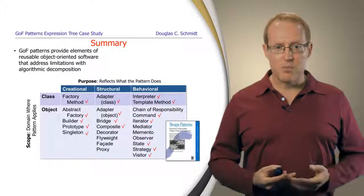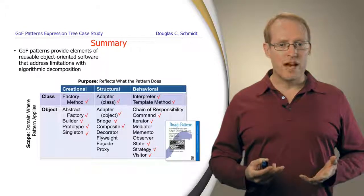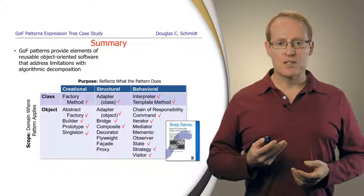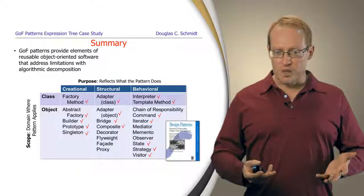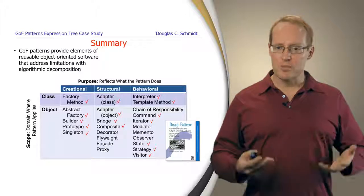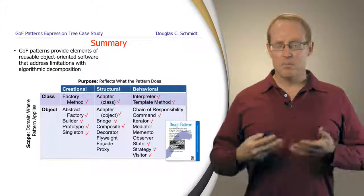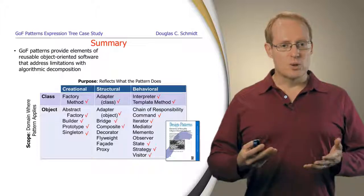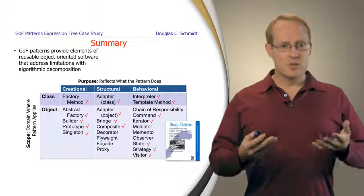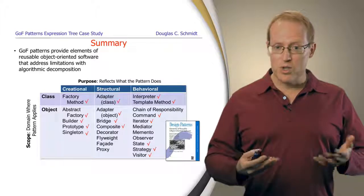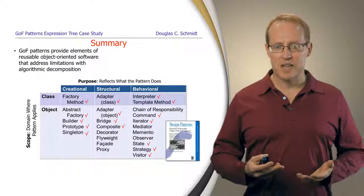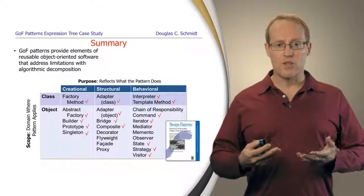So to summarize this part of the module, the Gang of Four patterns provide elements of reusable object-oriented software that can be used to address many of the limitations with algorithmic decomposition and other design approaches that do not lend themselves as readily to understandability, reusability, modularity, extensibility, and so on. So for the rest of this module, we will look at each of these patterns in turn, understand the circumstances and the design problems that motivate their use, and then describe how they can be applied in order to make the expression tree processing application much easier to understand and work with and evolve over time.